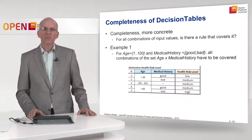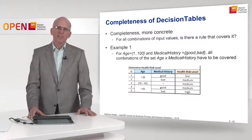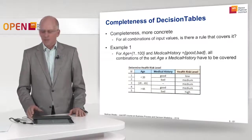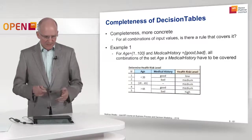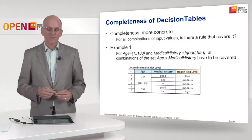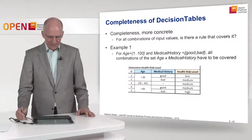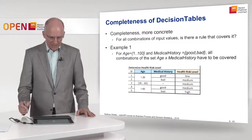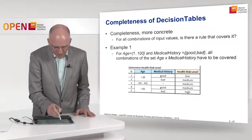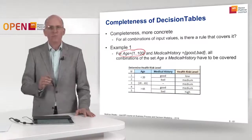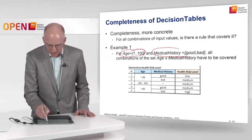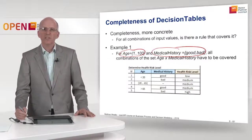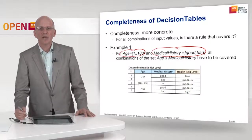Let's start with looking at the completeness of decision tables. More concretely, what does completeness mean? It means: for all combinations of input values, is there a rule that covers it? We'll investigate the completeness property for the following example of a health risk level decision. We have two input columns — age and medical history. The domain of age is natural numbers from 1 through 100, and the medical history has values good and bad. We have to check if all combinations of the Cartesian product of age times medical history are actually covered.